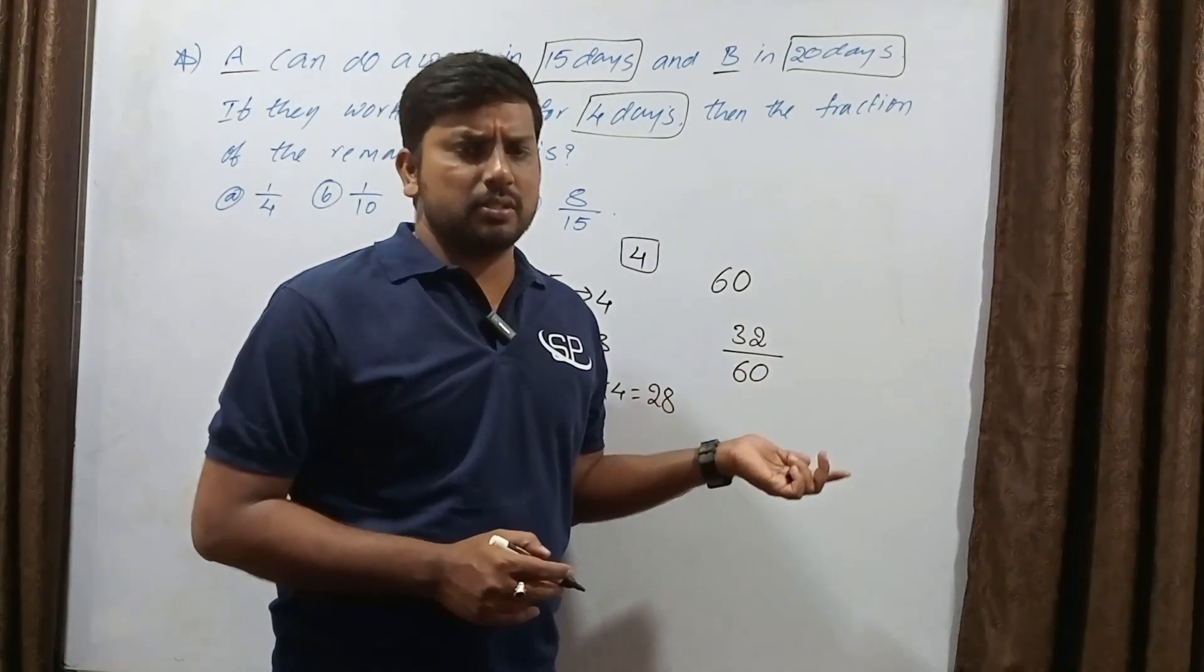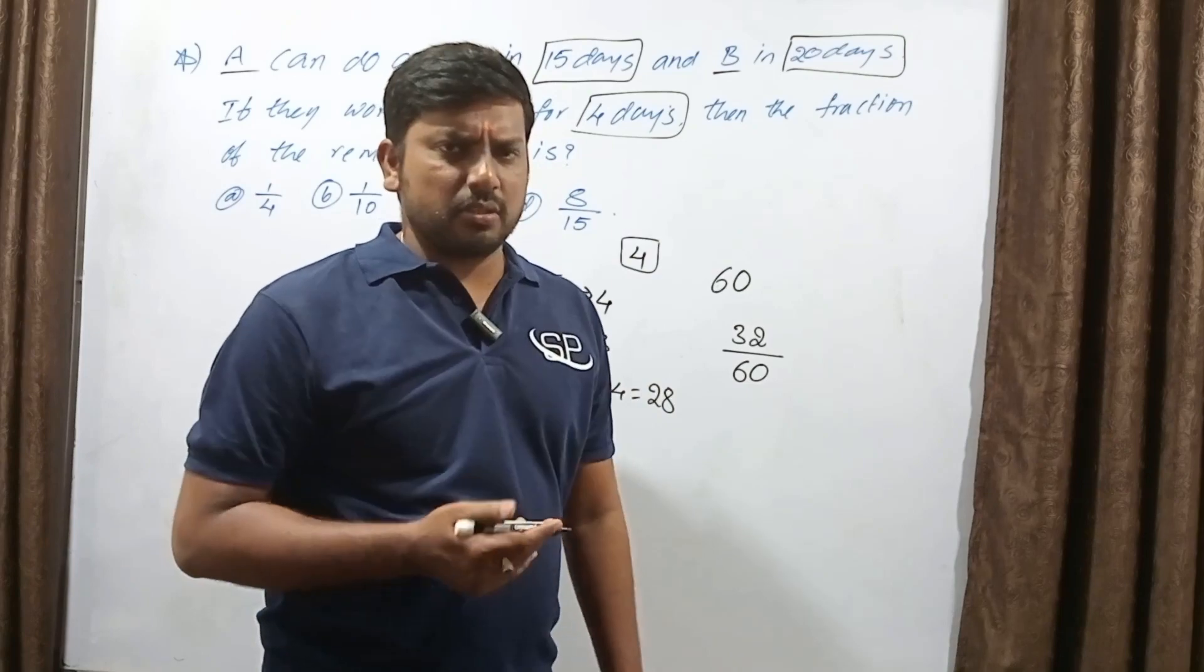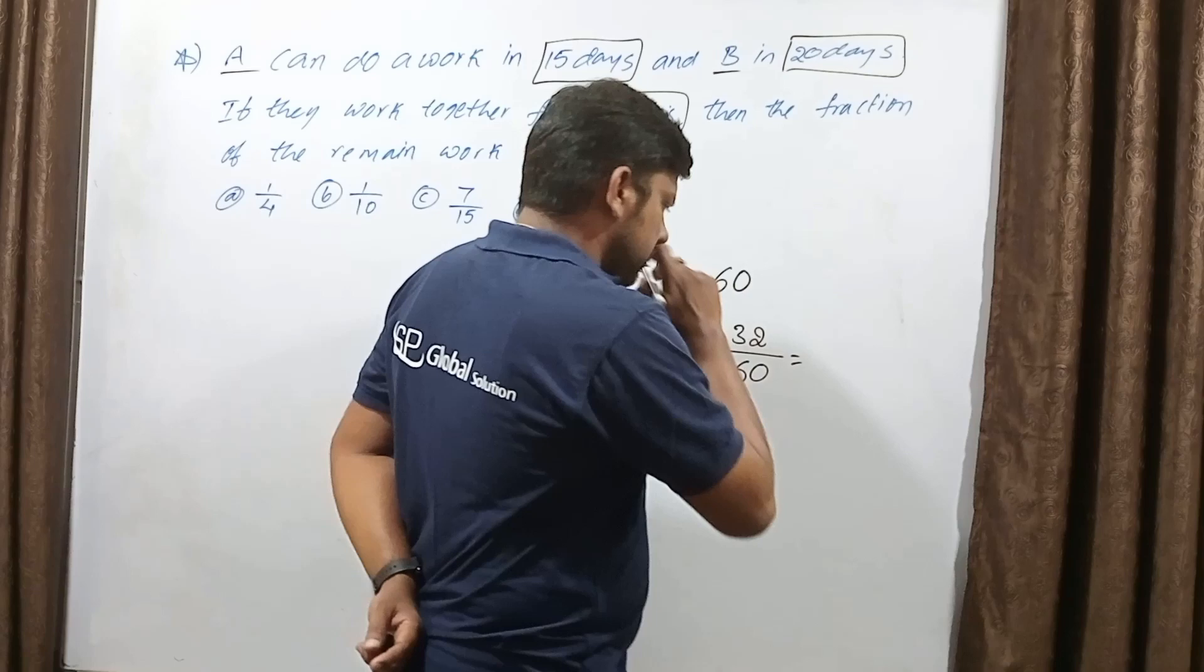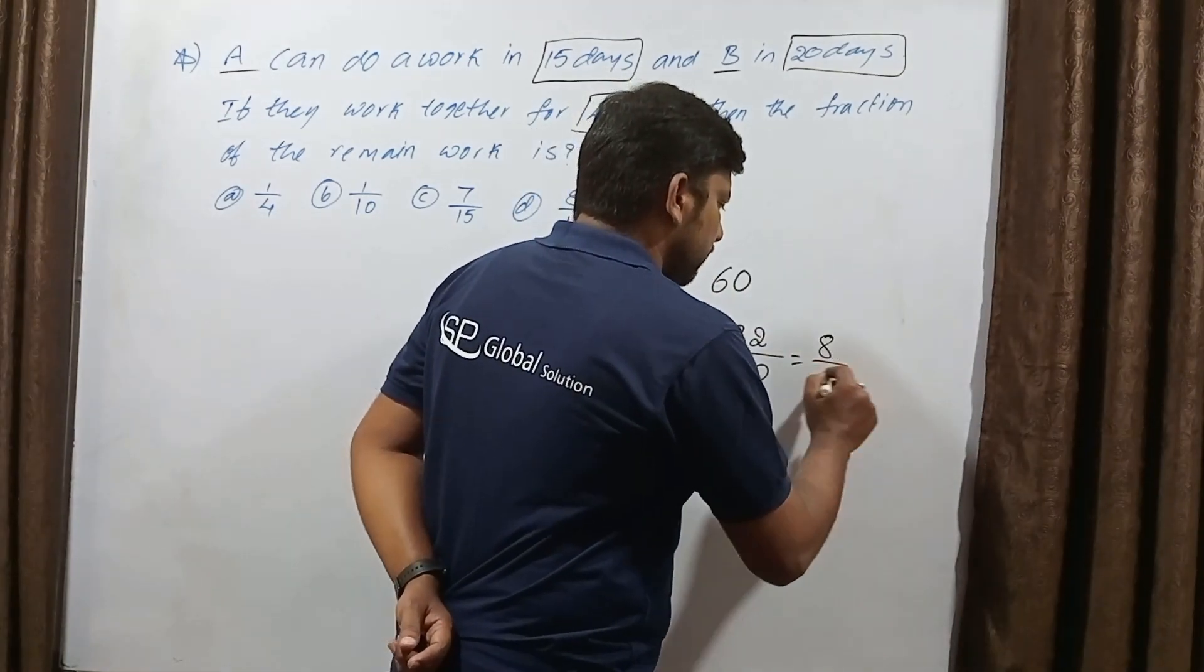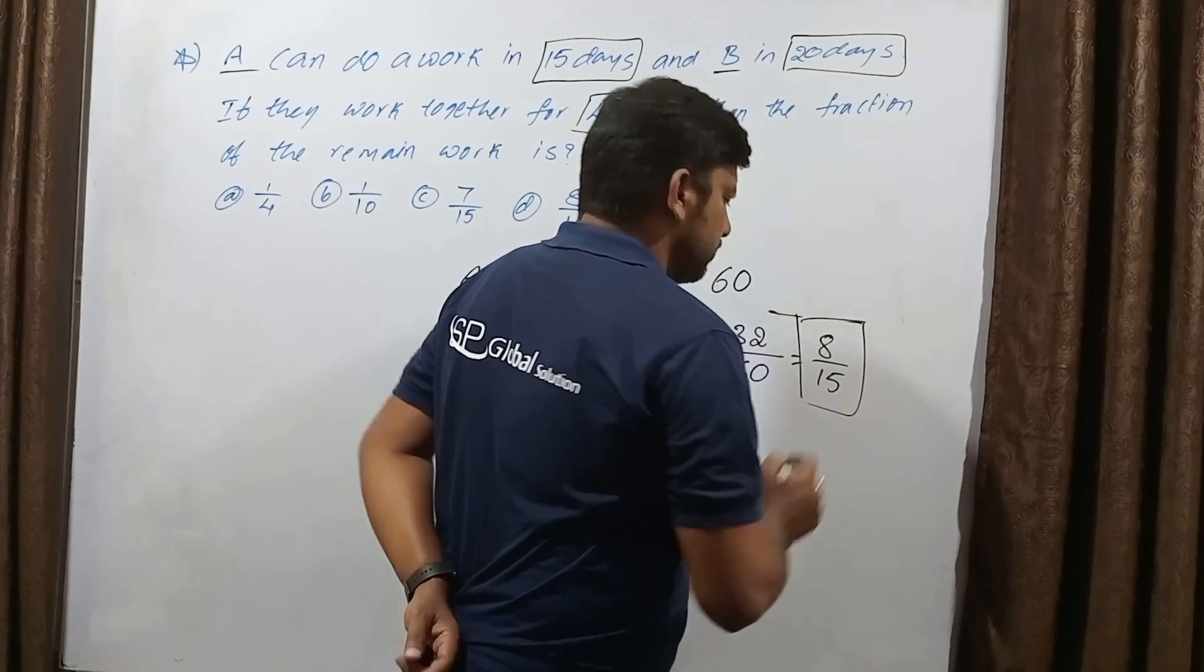7 times 4 is 28, so 32 remaining out of total work of 60. 32 by 60 - if you cancel it, 4 goes into 8 and 4 goes into 15. So 8 by 15.